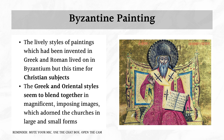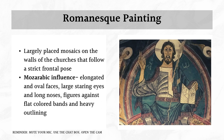Let's discuss Byzantine painting first. The lively styles of painting invented in Greek and Roman times lived on in Byzantium, but now applied to Christian subjects. Before, during the Greek and Roman period, subjects were mostly heroes and mythology. During the medieval period, subjects became religious in nature. The Greek and Oriental styles blended together in magnificent, imposing images that adorn churches in both large and small forms.